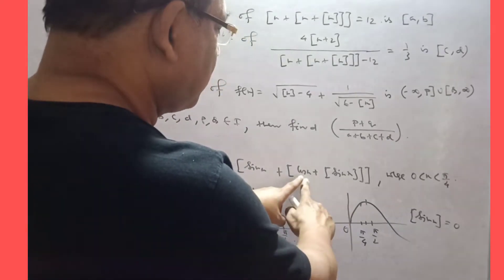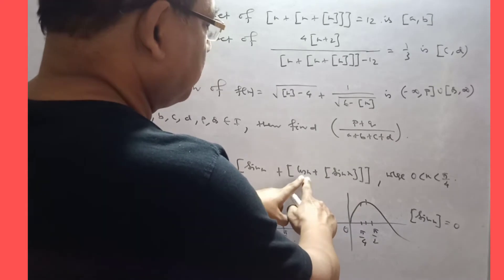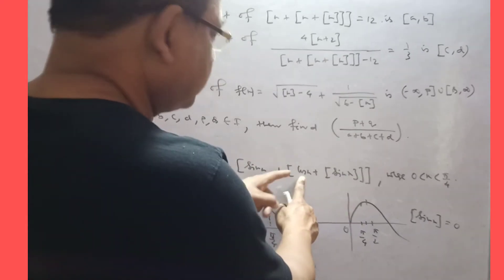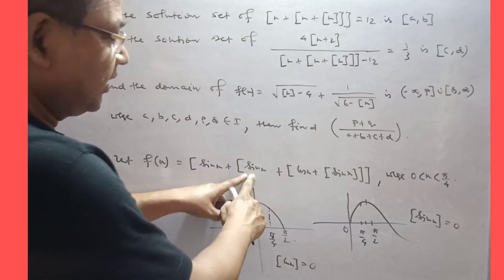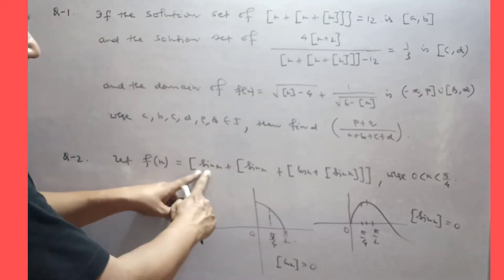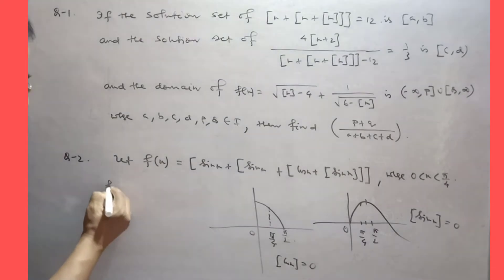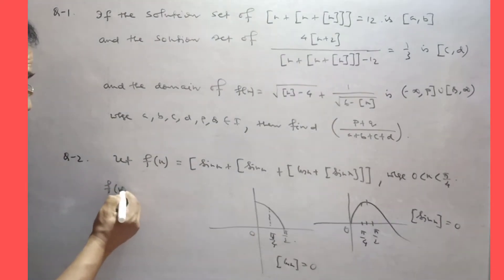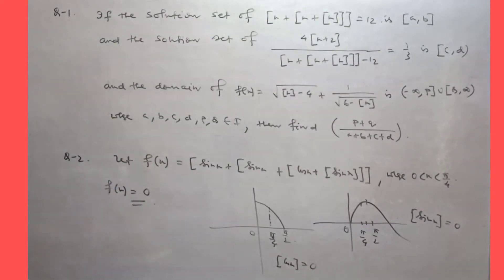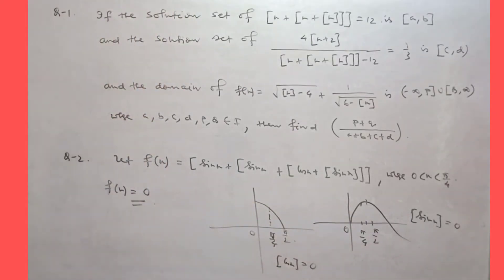When cos X gives greatest integer 0, and greatest integer of sin X is also 0, the value of C is 0. So the answer is 0 — nothing else.